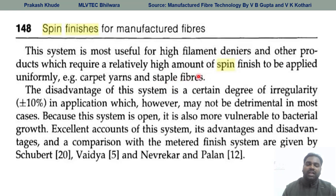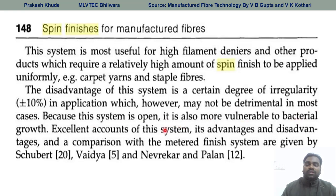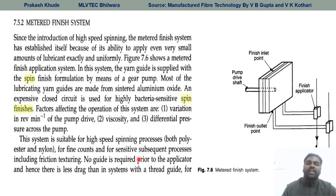This method can be called the dipping roller method or kiss roller method. If the yarn and roller move in opposite directions, there would be more splicing and greater finish application. The disadvantage of this system is a certain degree of irregularity in the application. However, since this system is open it could be more related to bacterial growth. Its advantages and disadvantages compared to the metering finish system have been reported by researchers.